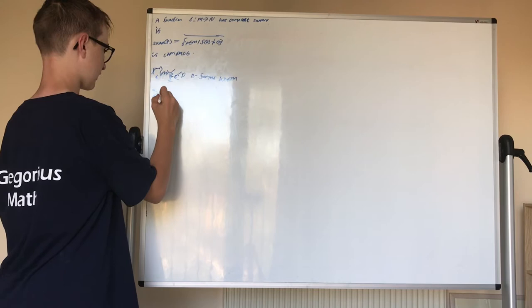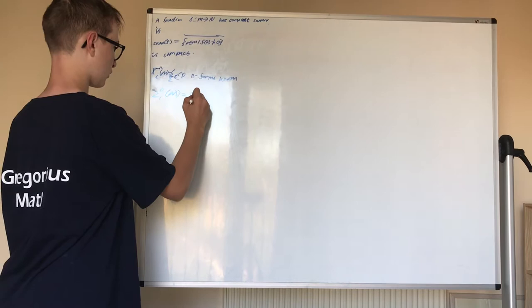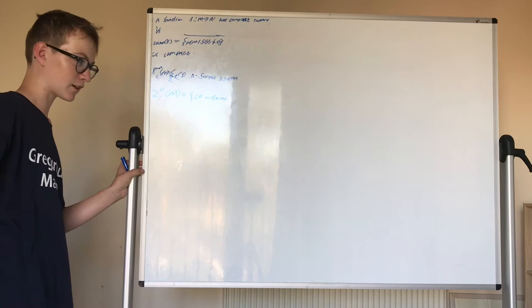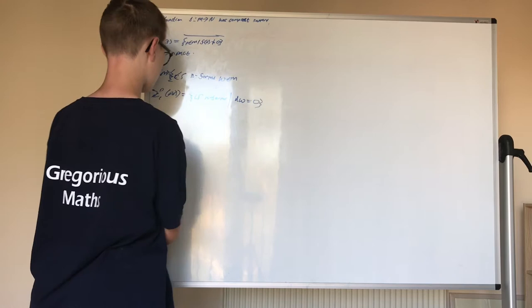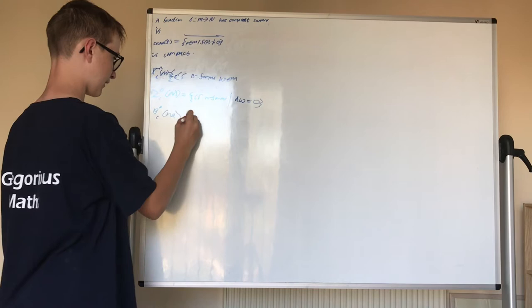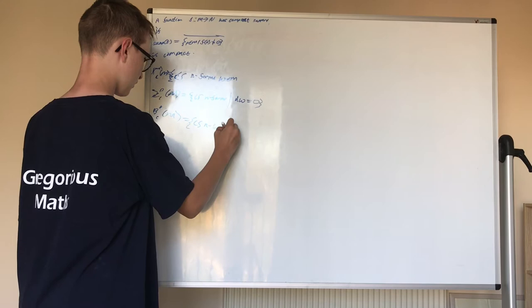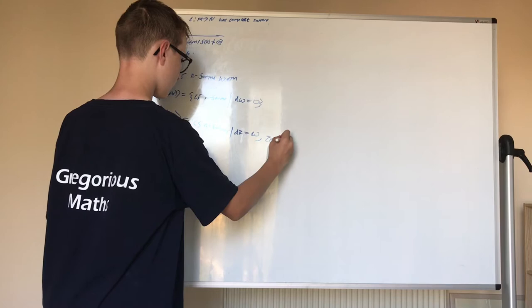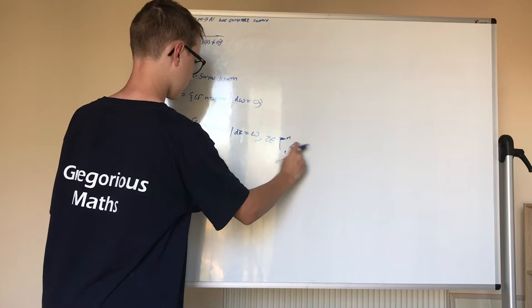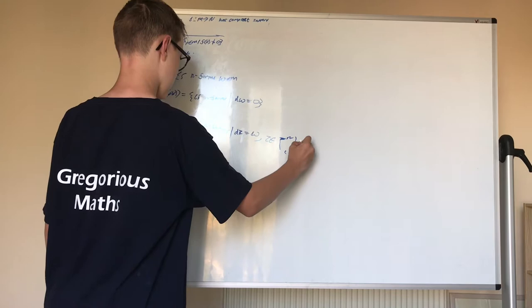And then Z to the P with little c of M. This is the set of all compactly supported N forms such that D Omega equals zero. And B to the P sub C of M is defined analogously to last video. Set of all compactly supported N forms, such that D Tau equals Omega for some Tau in Gamma N minus one of M.